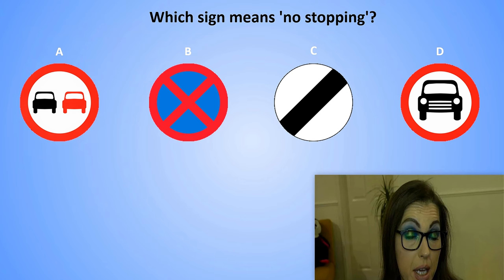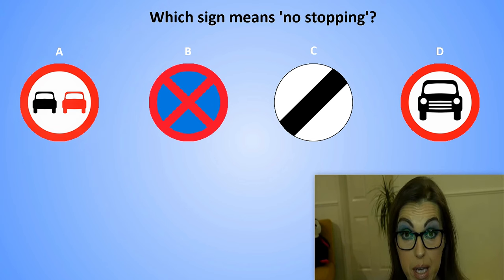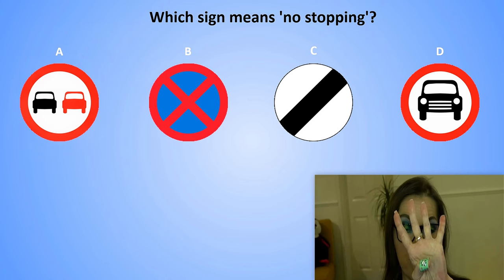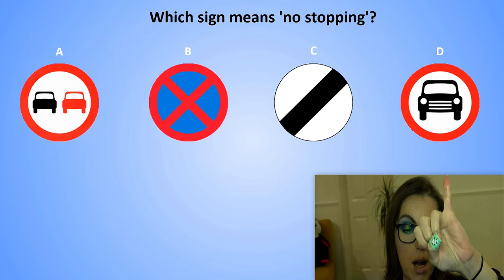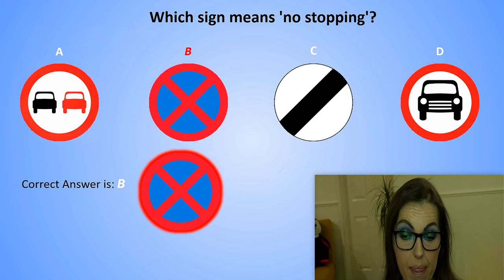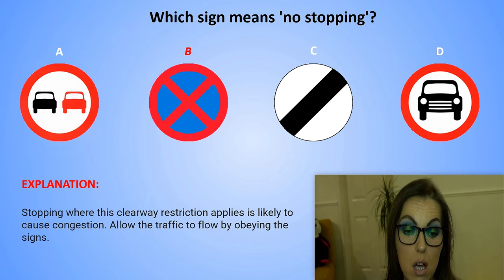Which sign means no stopping? Sign A, Sign B, Sign C, or Sign D? The correct answer is B. Explanation: Stopping where this clearway restriction applies is likely to cause congestion. Allow the traffic to flow by obeying the signs.